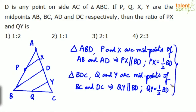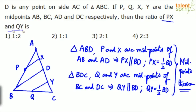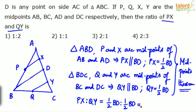This is based on the midpoint theorem, which we've discussed in the video — you can go through it. Now the ratio of PX to QY: PX is half of BD and QY is half of BD, so PX to QY is 1 is to 1. That's the answer — option 2, one is to one.